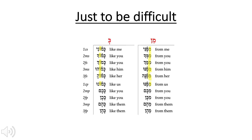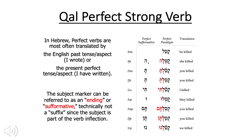It's worth mentioning that two of the prepositions, kaf and min, really like to take a different form when they're added to the pronominal suffixes. We need to be aware of the doubling of the mem in min and the adding of the holam-vav in the kaf.